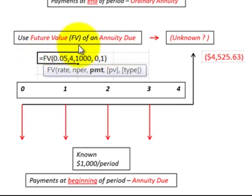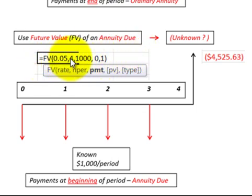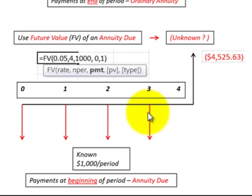Moving to the future value of an annuity due — payments are received at the beginning of each period or year. They're equal payments received at the beginning of each year, and we compound them forward to determine their future value. Again using the future value function in Excel, we put in the interest rate, number of periods, the payment amount, no present value. But here the type is one, which tells the function that those payments are received at the beginning of each period. Entering that, we get a future value of $4,525.